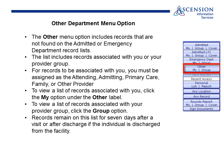Other Department menu option: the Other menu option includes records that are not found in the admitted or emergency department record list. This includes records associated with you or your provider group. For records to be associated with you, you must be assigned as the attending, admitting, primary care, family, or other. To view the list of records associated with you, click the My option under the other label. To view a list of records associated with your provider group, click the Group option. Records will remain on this list for seven days after a visit or after discharge if the patients are discharged from this facility.